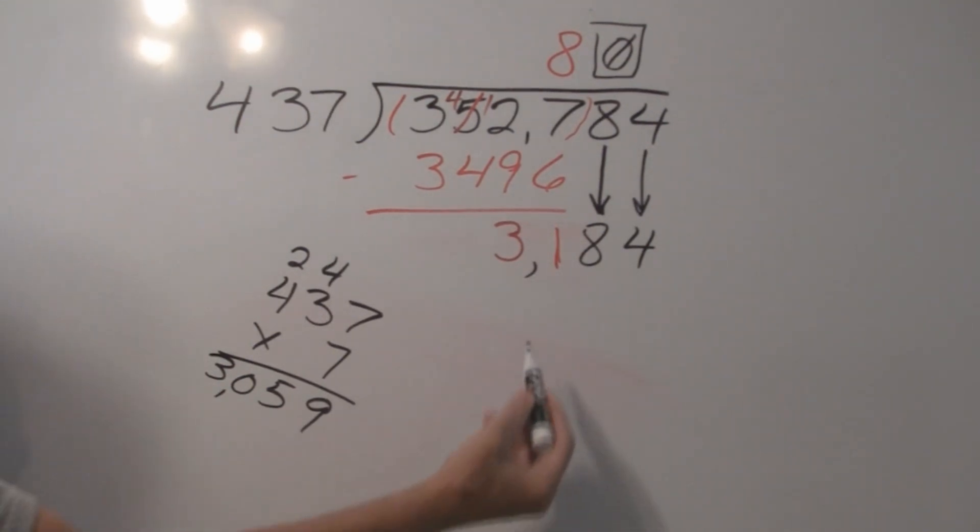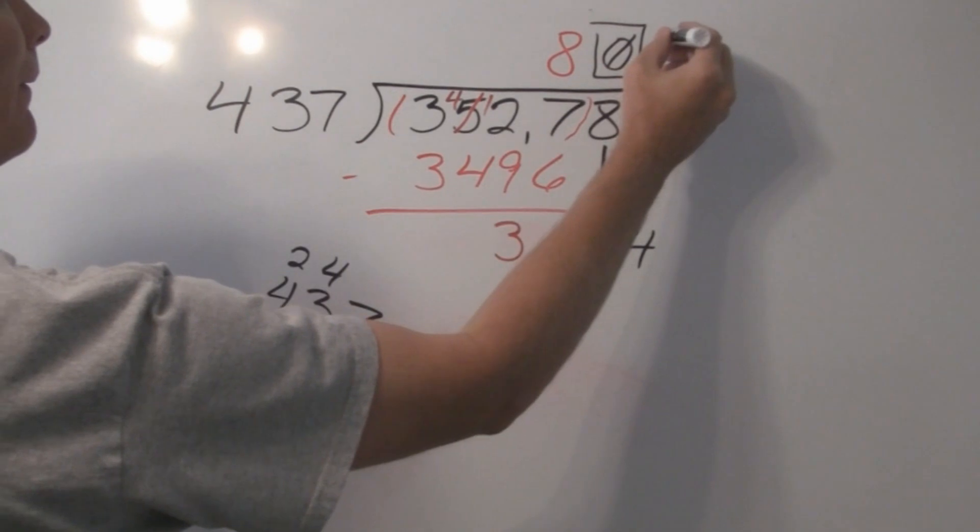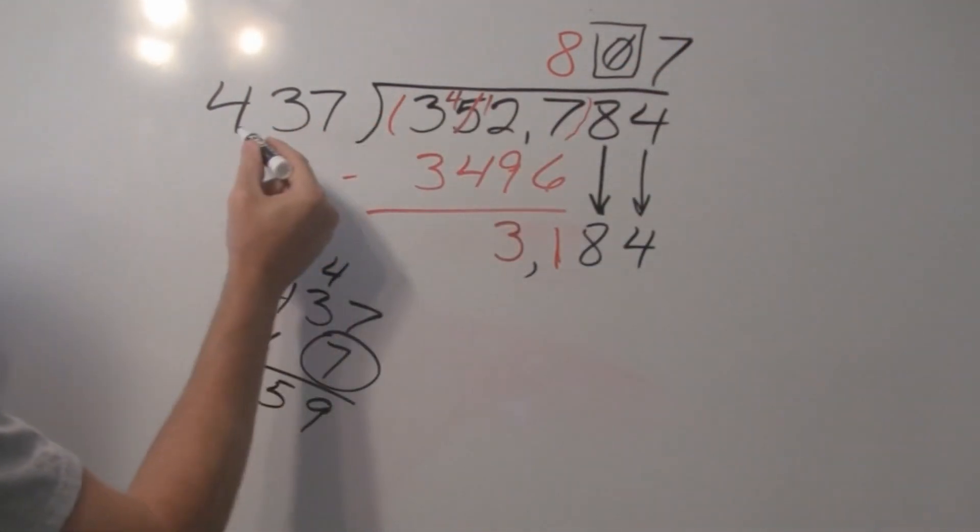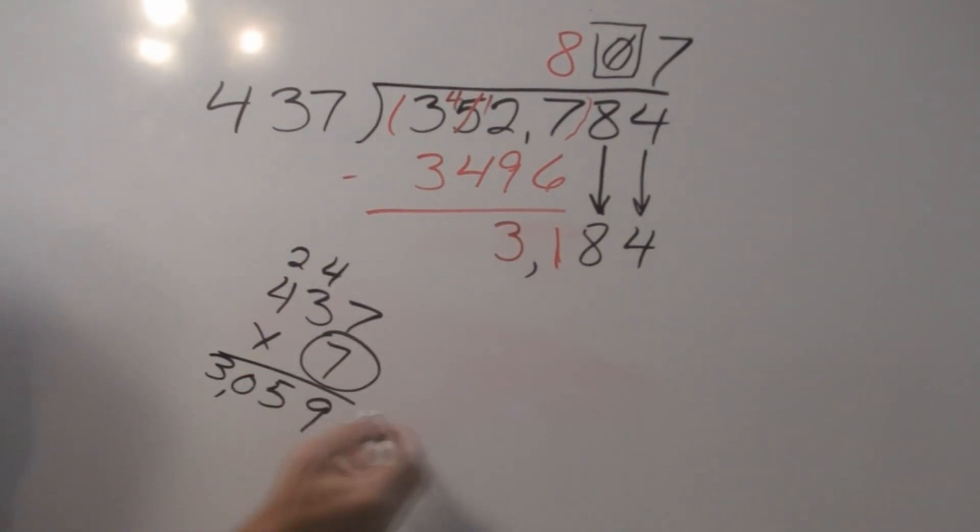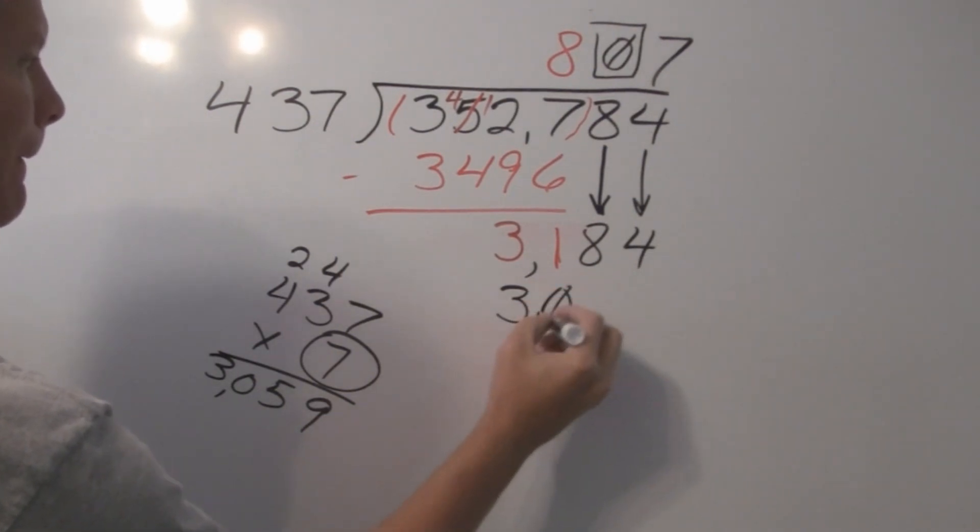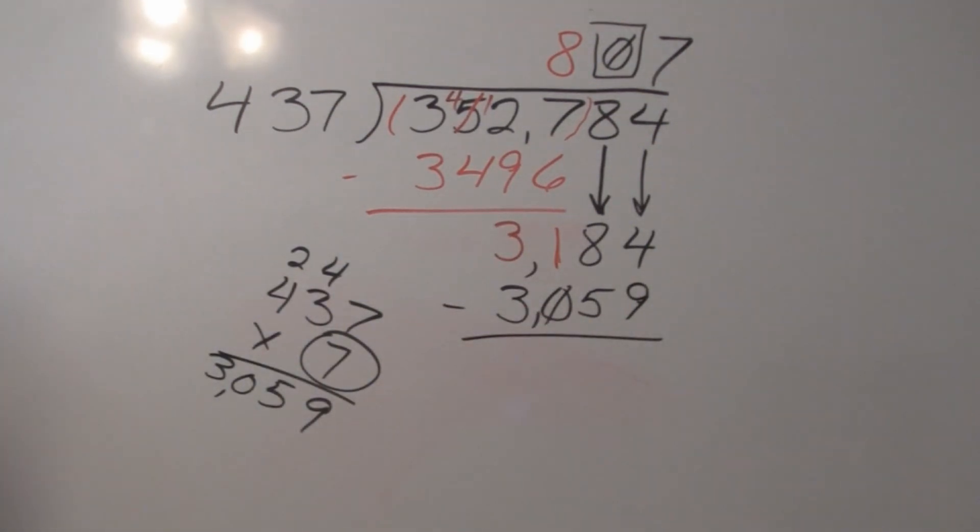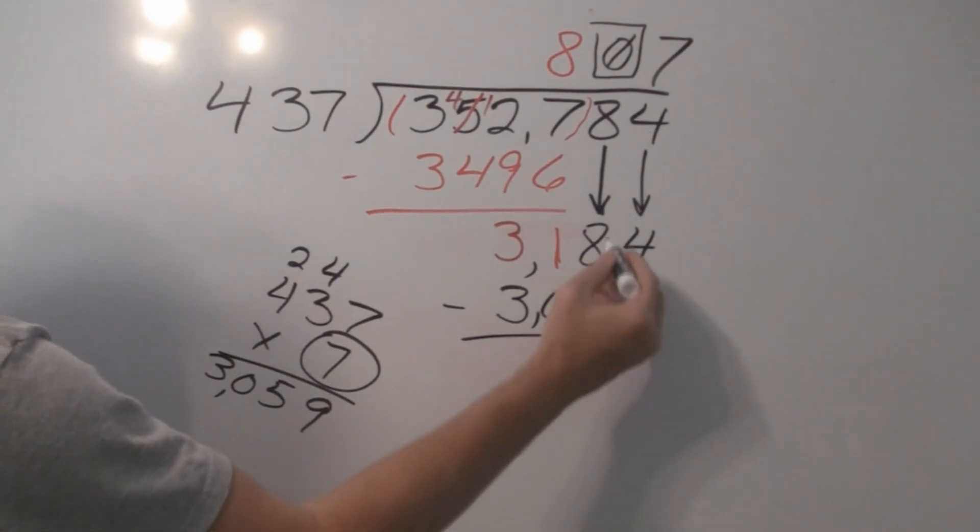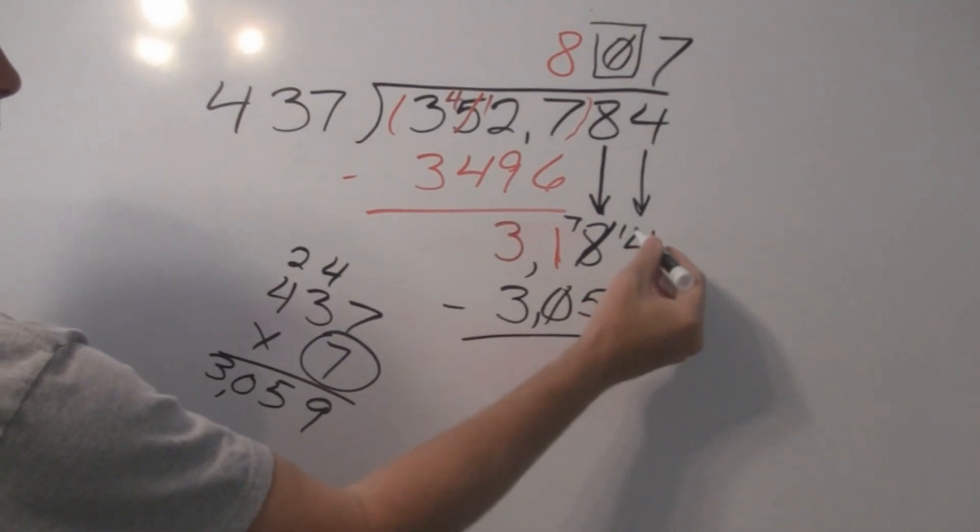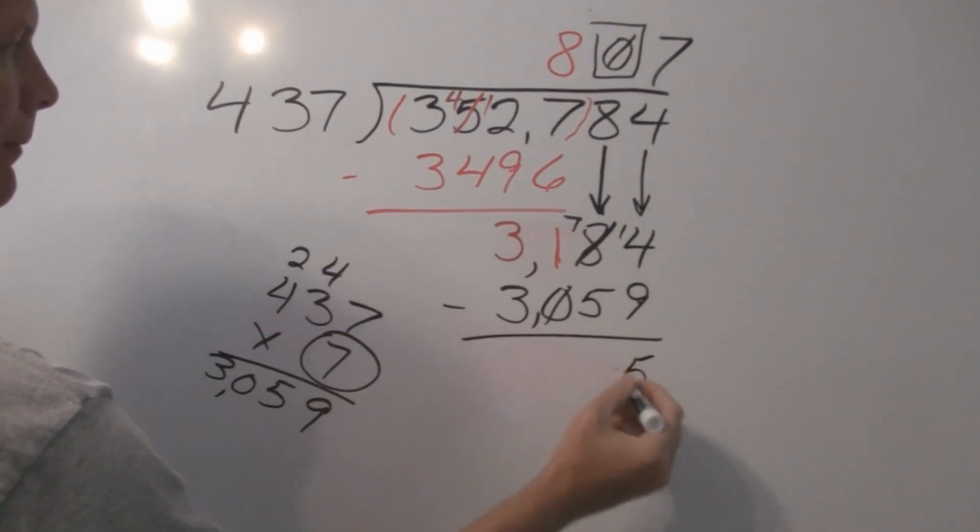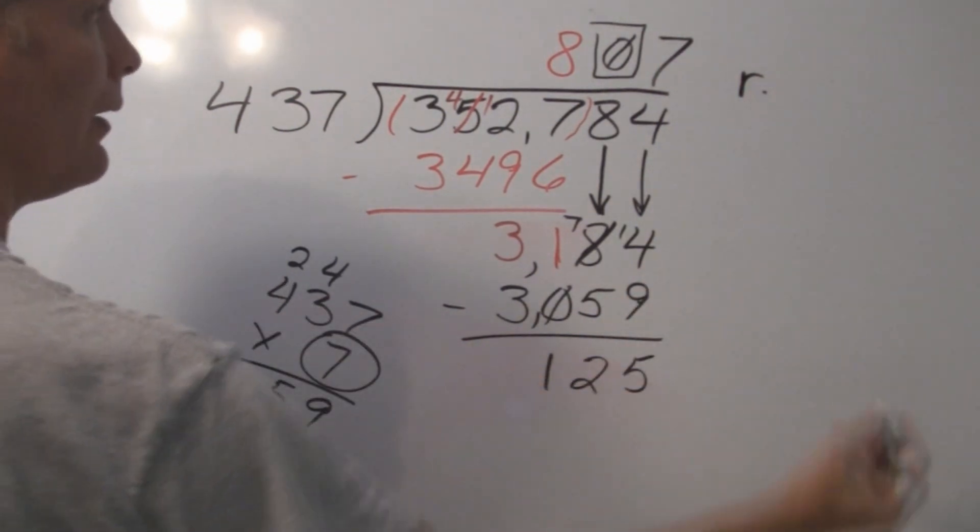30. Is 3,059 less than 3,184? Yes. I think we found the right answer. So we've determined that 7 is our next number. 7 times 437 equals 3,059. 3,059. Subtract. We're going to have to borrow from our 8. This becomes a 7. So now we have 14 minus 9 equals 5. 7 minus 5 equals 2. 1 minus 0 equals 1. Correct. And we know that this is 0. So we know that we have a remainder of 125.